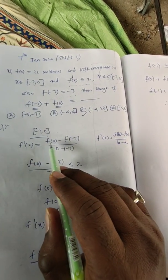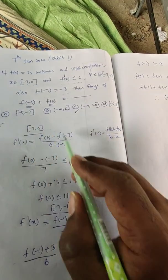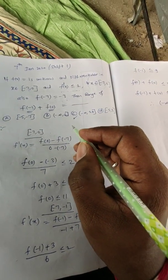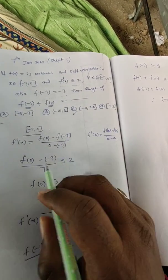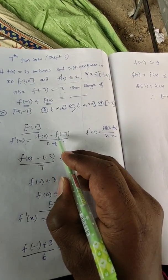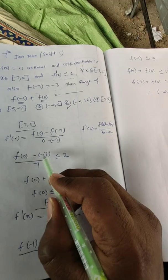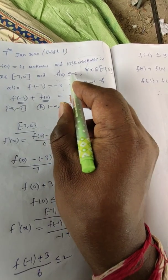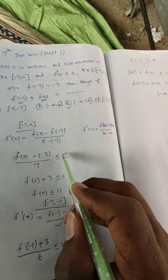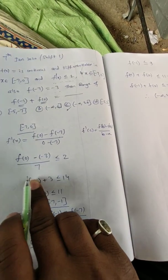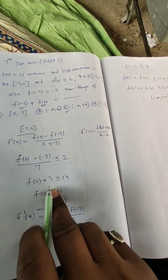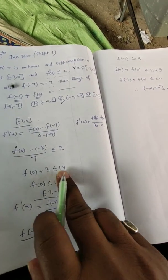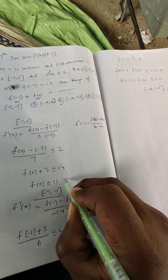So f'(x) = [f(0) - f(-7)] / [0 - (-7)]. If you want to understand this more clearly, just watch my video on LMVT. Now f(0) - f(-7) which is -3, so f(0) + 3 divided by 7. In the question clearly given f'(x) ≤ 2. So [f(0) + 3] / 7 ≤ 2, which gives f(0) ≤ 14 - 3 = 11. This is the first option done.